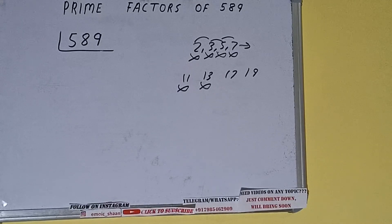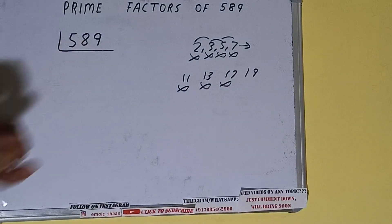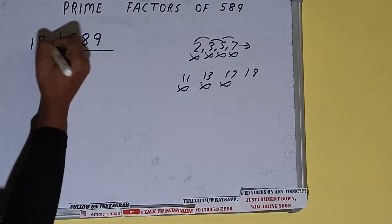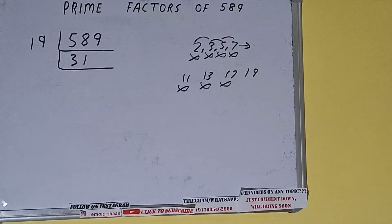Let's check with 19. 19 threes are 57, 19. With 19 it is divisible! So let's divide. 19 threes are 57, 19 once is 19. We'll be having 31, and 31 is further not divisible by 19.